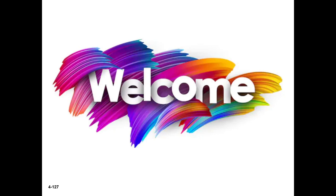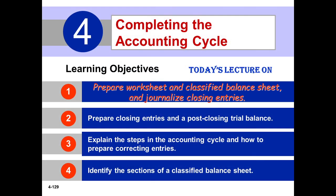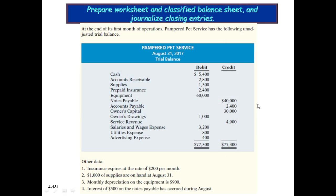Welcome. Today's lecture follows this book, covering the repair worksheet, classified balance sheet, and generalized closing entries. At the end of the first month of operations, a paid service company has the following unadjusted trial balance. From this unadjusted trial balance, and after considering four adjusting entries, we need to prepare the worksheet first.